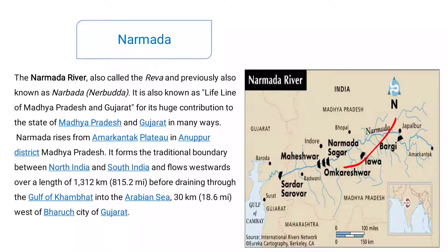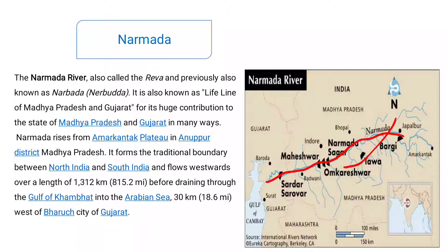Looking at the map, you can see Jabalpur here. From Jabalpur the river flows through the state — Bhopal, Indore, Maheshwar, Omkareshwar, and Sardar Sarovar are all along the Narmada's course. The river flows westward, and its length is 1,312 km, which is 815.2 miles.